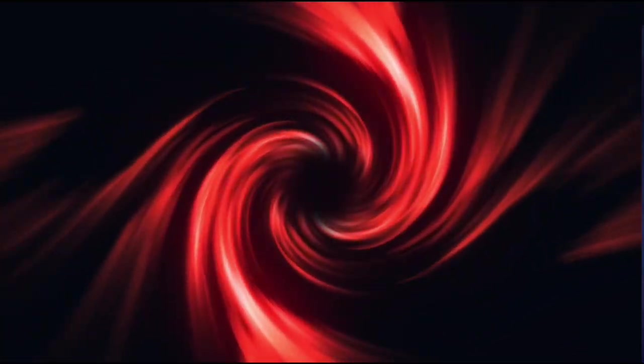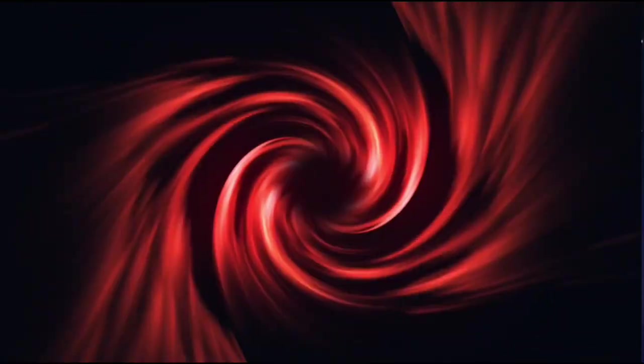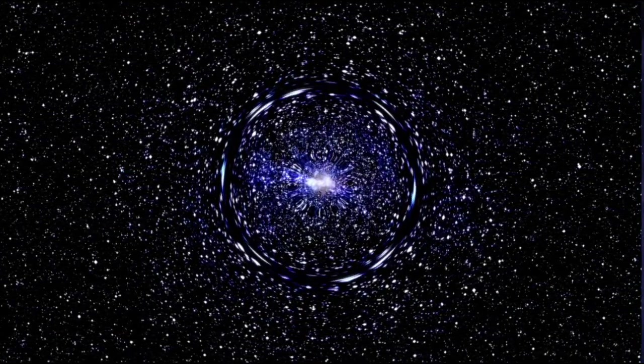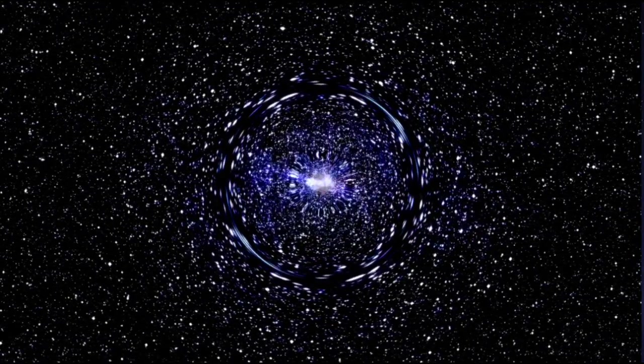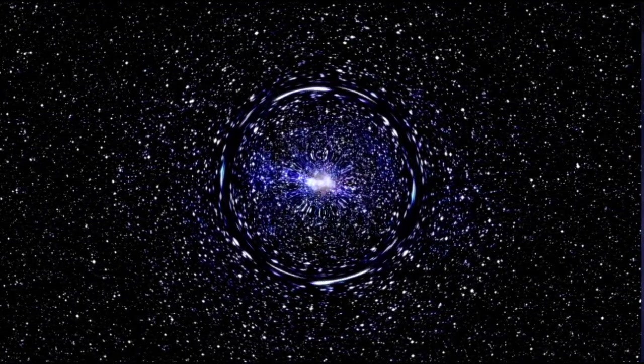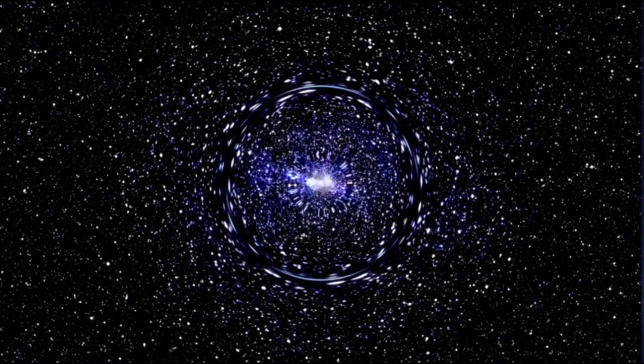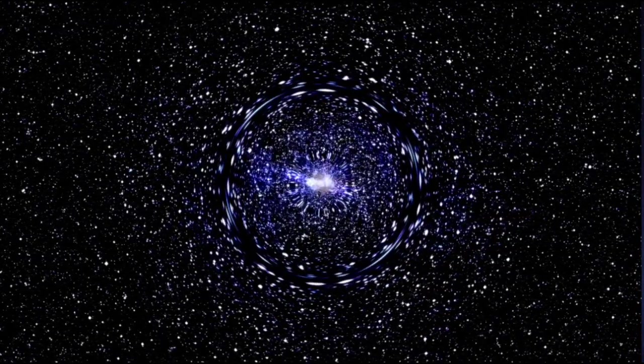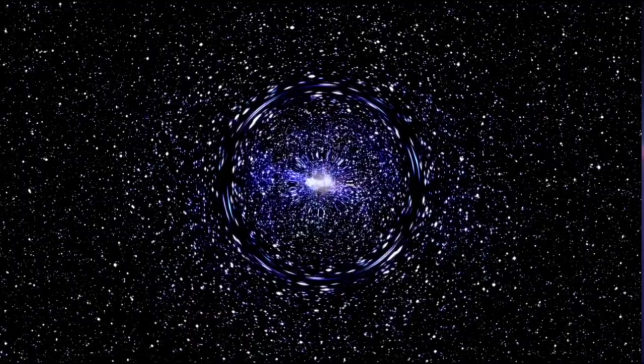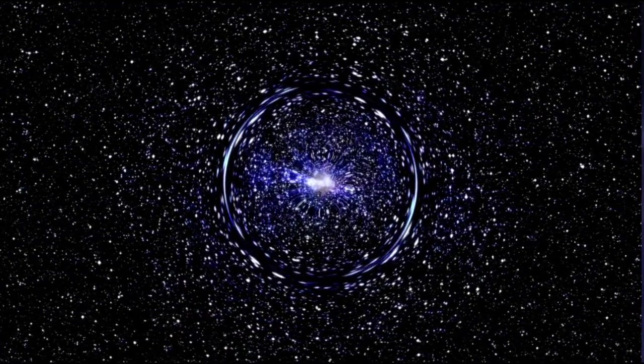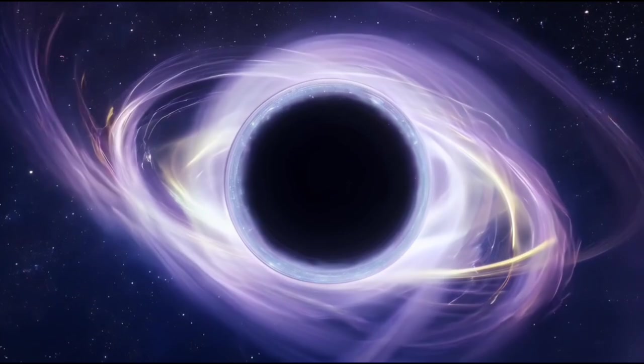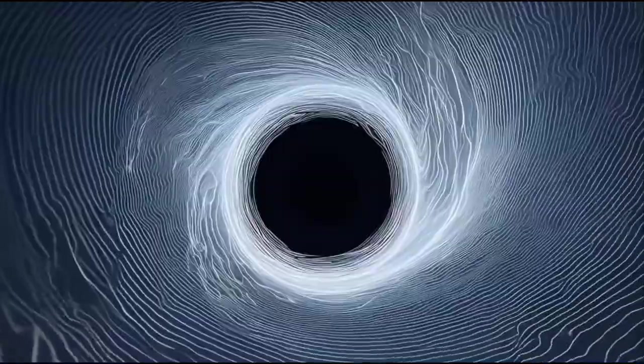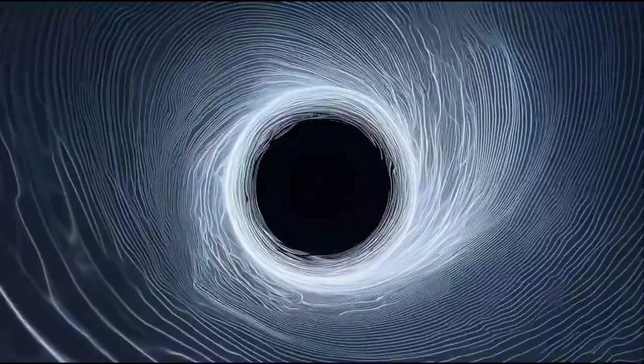To grasp the idea of a wormhole, it's important to understand the concept of space-time. Einstein's theory of space-time is a four-dimensional fabric that is warped by objects with mass. This warping creates gravitational fields that influence the movement of other objects. Think of space-time as a piece of paper. If you fold the paper, you create a shortcut between two points. This shortcut is the essence of a wormhole, a passage through space-time that could connect distant locations almost instantaneously. Although wormholes are a theoretical concept and no direct evidence of them exists, they are a natural consequence of general relativity.